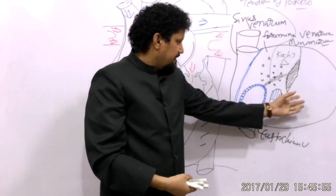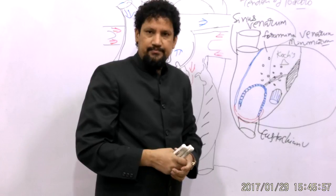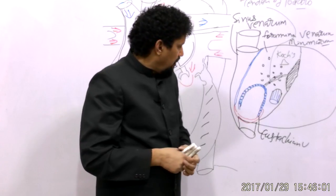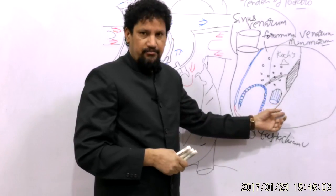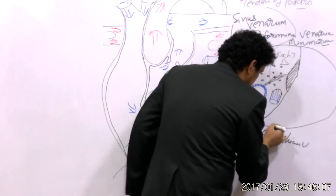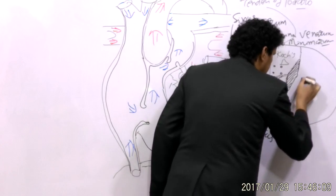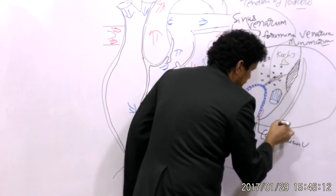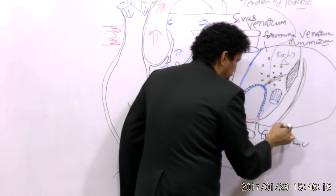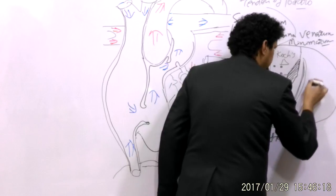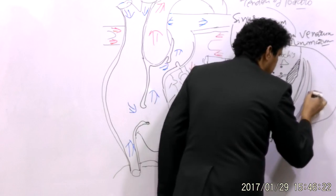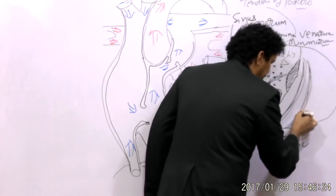The anterior rough surface, or atrium proper, is formed by the absorbed part of the primitive atrium. It has transversely running ridges known as musculi pectinati or pectinate muscles — elevations formed by these muscles.